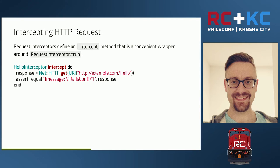The result of the define call is a class — a Sinatra application with added benefits. One of those benefits is that this application provides you with an intercept method. The intercept method is just a convenient wrapper around run. Instead of having to pass in the hostname and application everywhere, you can just call intercept on your interceptor, provide it with a block, fire off an HTTP request, and assert that the correct message is returned.